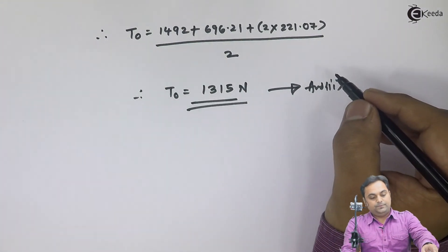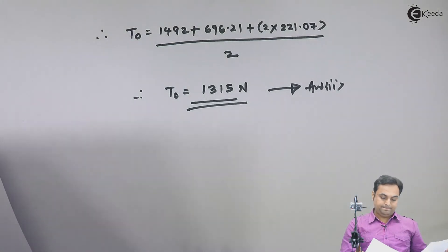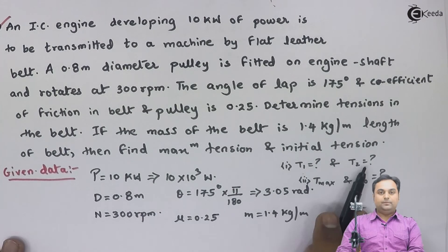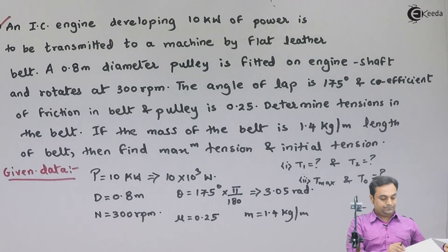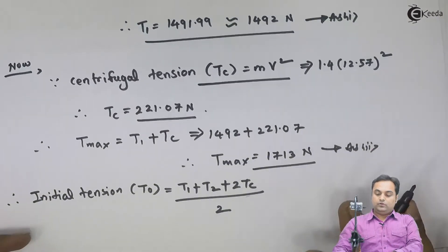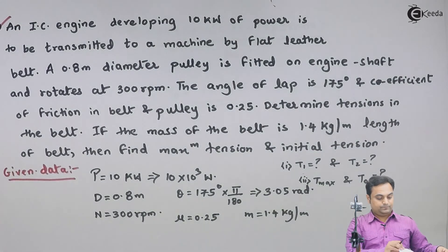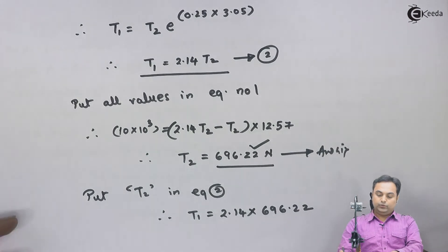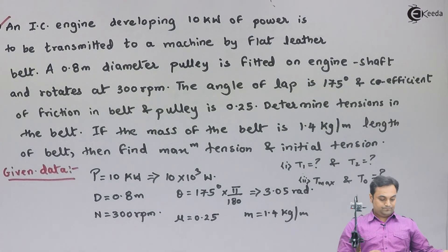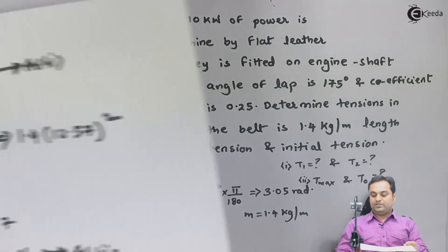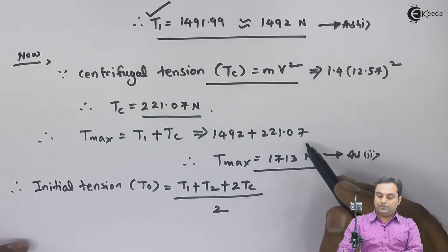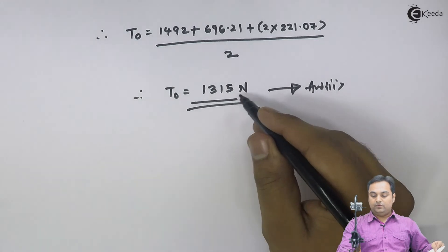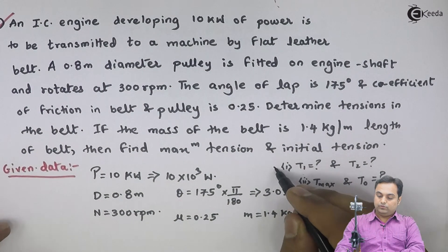To summarize this problem: first, tension in tight side t1 = 1492 newton; tension in slack side t2 = 696.22 newton. Then, maximum tension T_max = 1713 newton, and initial tension t0 = 1315 newton. All four unknown values have been found out and with this we complete the question.